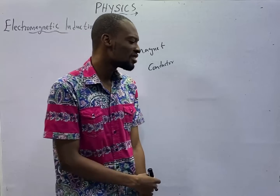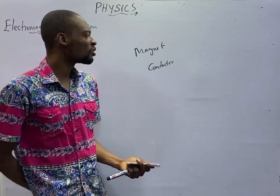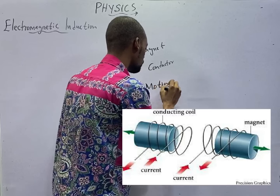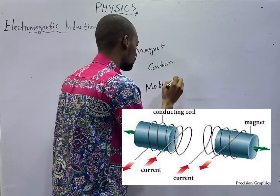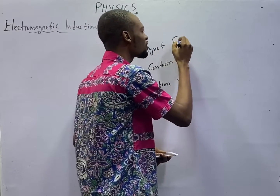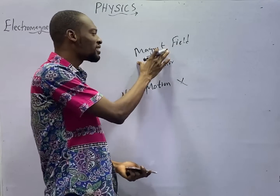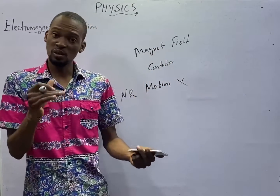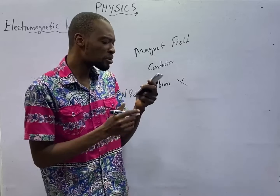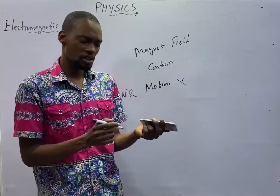When there is a magnet and there is a conductor, if there is no motion, EMF cannot be induced. When you have a magnet with its own magnetic field, and there is relative motion — movement between the magnetic field and the conductor — that is the only reason EMF will be induced, and this induced EMF will give rise to current. But so long as both of them are stationary, there will be no current and there will be no EMF.